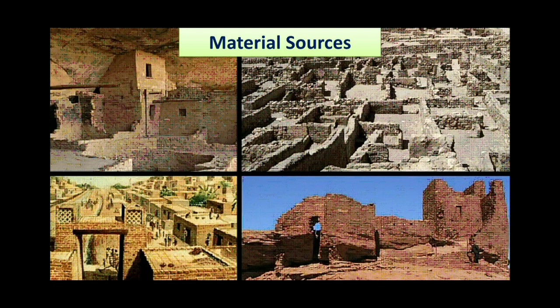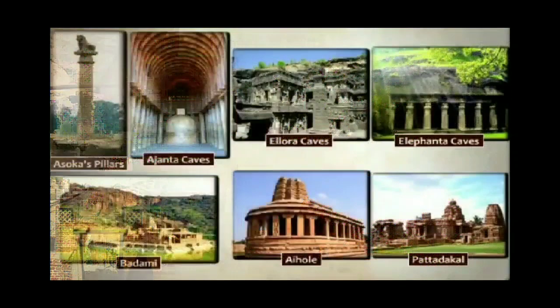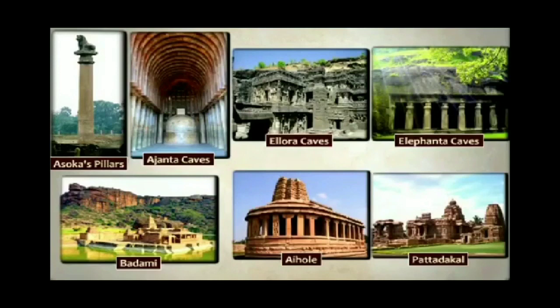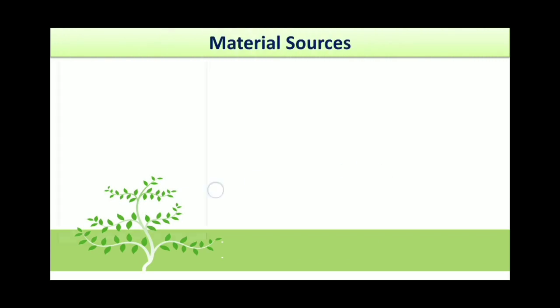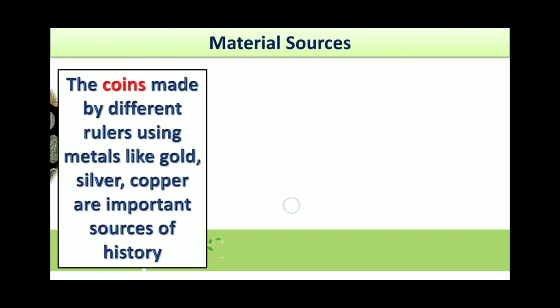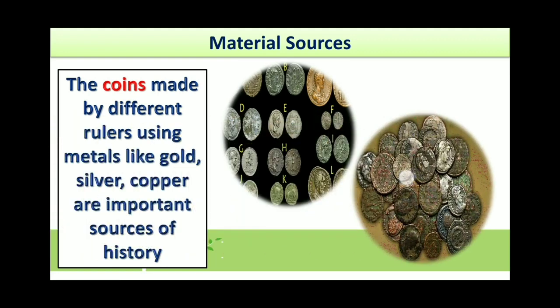Monuments are also important material sources. In fourth standard, you people learned about the history of Shivaji Maharaj, so forts are very important material sources that give us information about a period. Pillars, caves, and different types of temples are also material sources. The coins made by different rulers using metals like gold, silver, and copper are important sources of history. By coins, we get details about that period and the ruling king of that particular period.